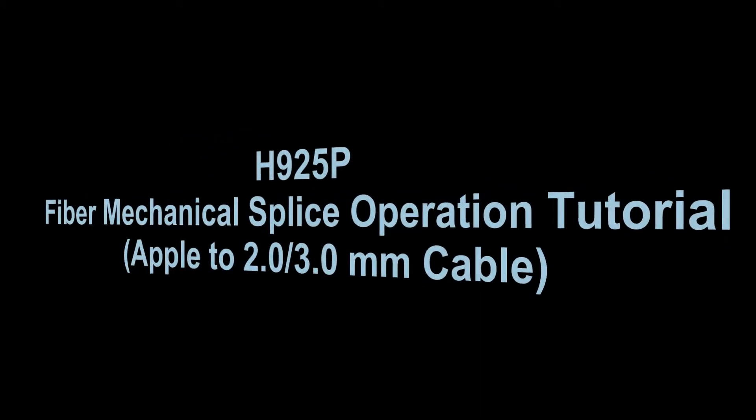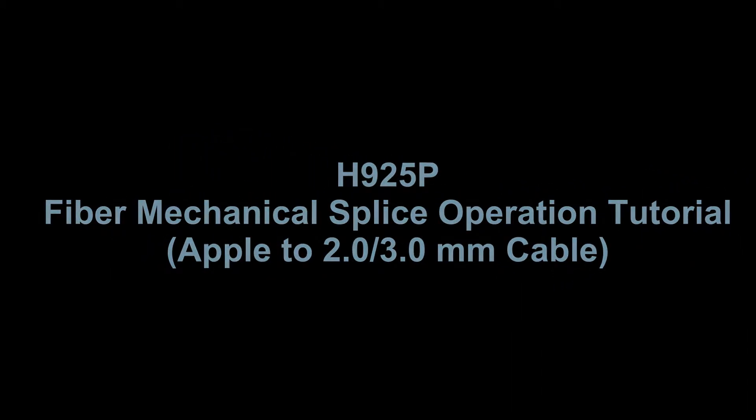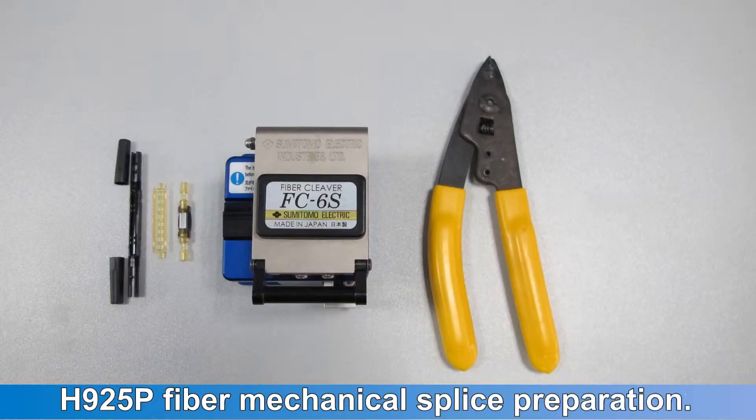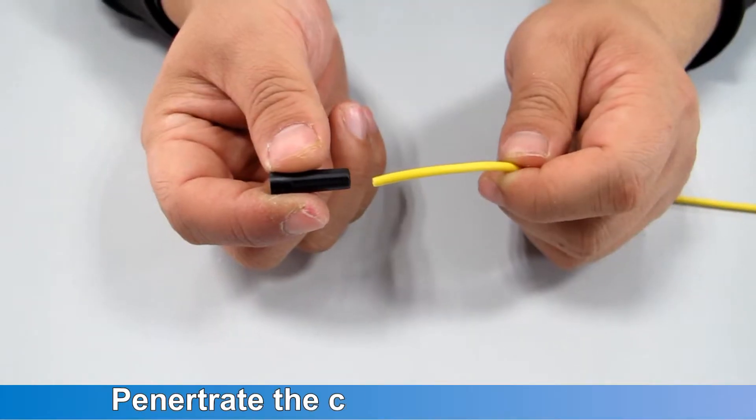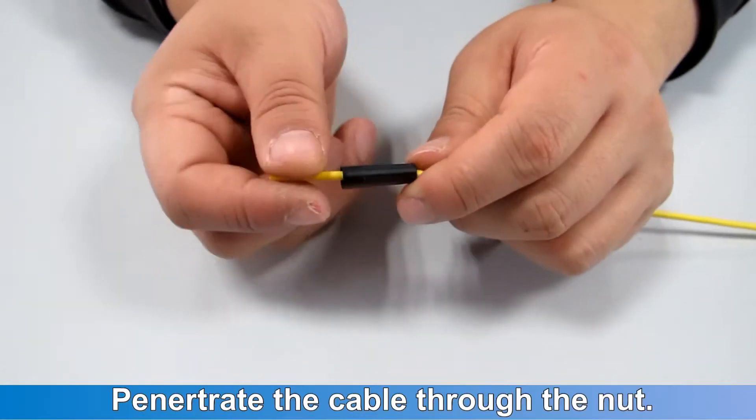H925P Fibre Mechanical Splice Operation Tutorial. H925P Fibre Mechanical Splice Preparation. Penetrate the cable through the nut.